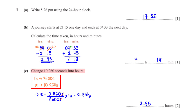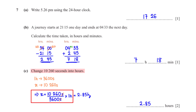Change 10260 seconds into hours. We know 1 hour = 3600 seconds, so we find the number of hours in 10260 seconds. When we cross-multiply and make x the subject, we get 2.85 hours.